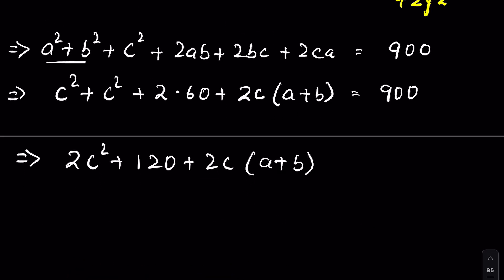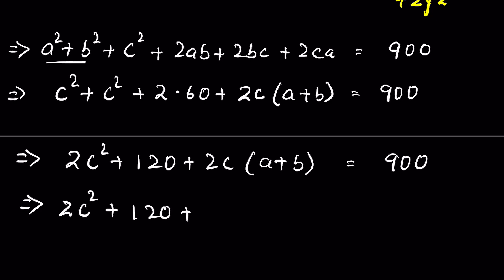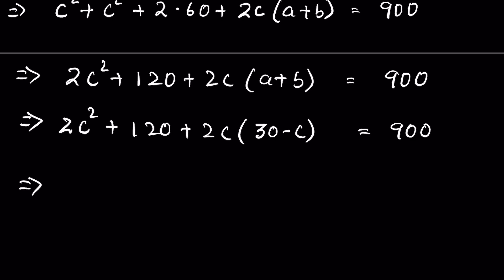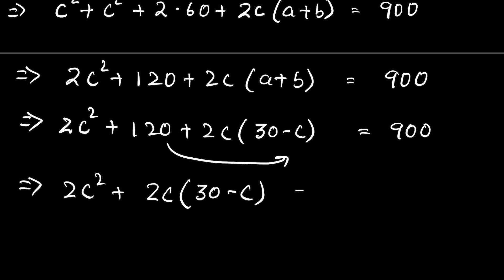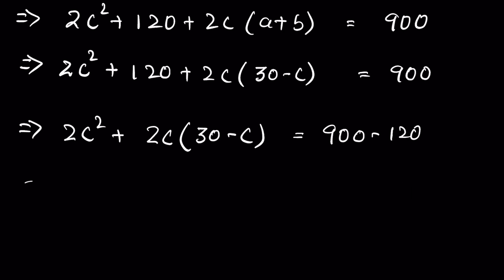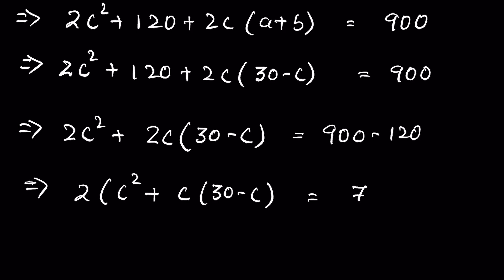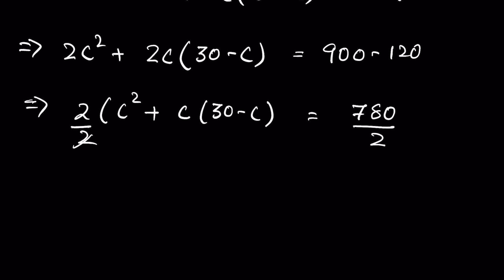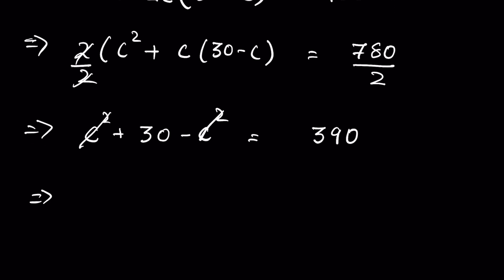We now have 2c squared plus 120 plus 2c times (a plus b) equals 900. From equation two, a plus b is 30 minus c. Substituting: 2c squared plus 120 plus 2c times (30 minus c) equals 900. Simplifying: 2c squared plus 60c minus 2c squared plus 120 equals 900. The c squared terms cancel, giving 60c equals 780, so 30c equals 390.